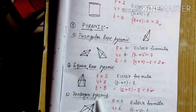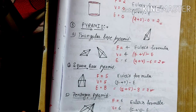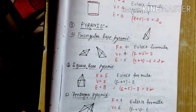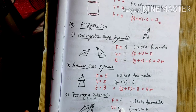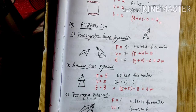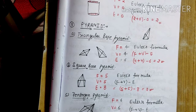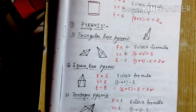Next is the pentagon pyramid. The faces are 6, vertices 6, and edges are 10.